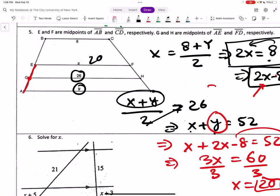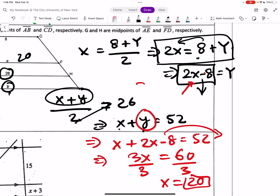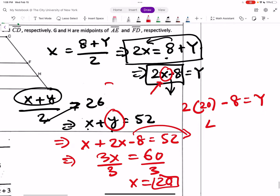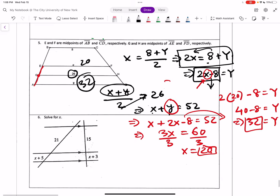And now, since we need Y, and we have a value for Y here, this guy. So let's plug in the value of X as 20 we got. So 2 times, this is 20 minus 8, that gives you Y. So it's 40 minus 8 is Y. So 32 is Y. So this guy is 32. Good? I think you should be good with that.